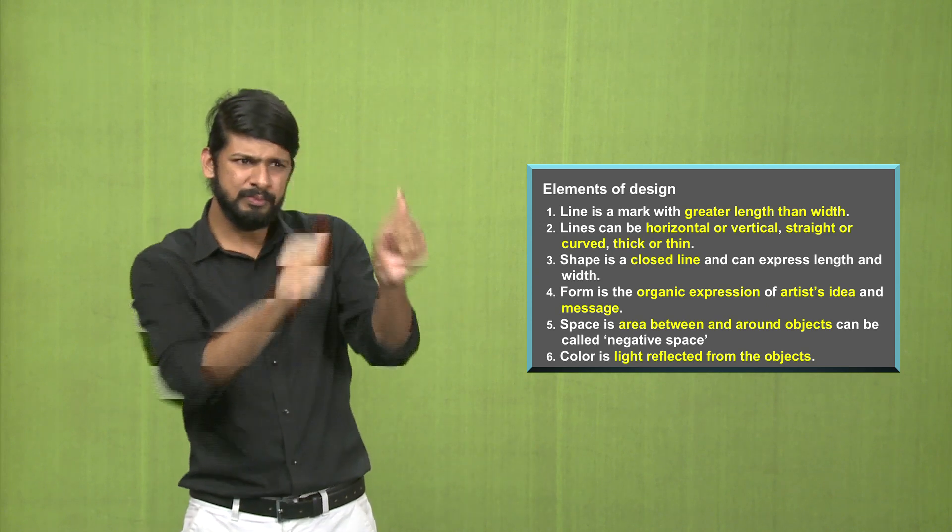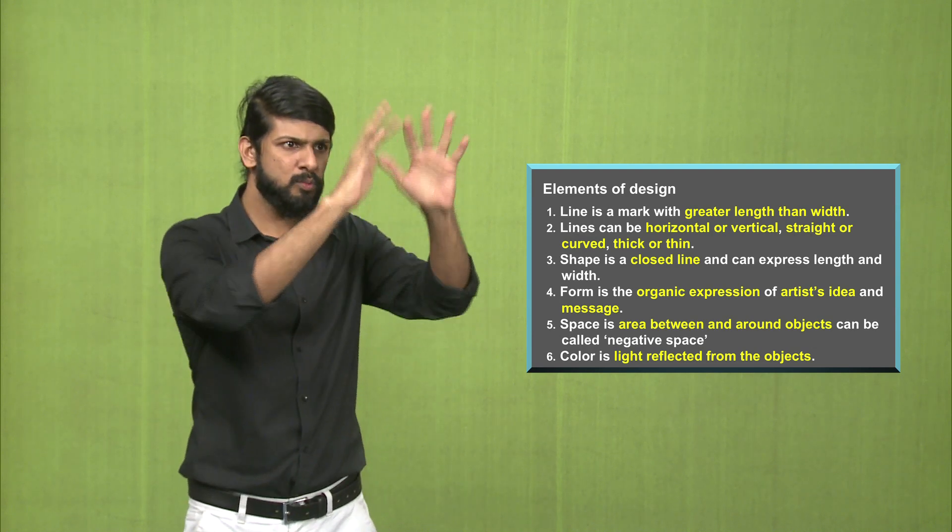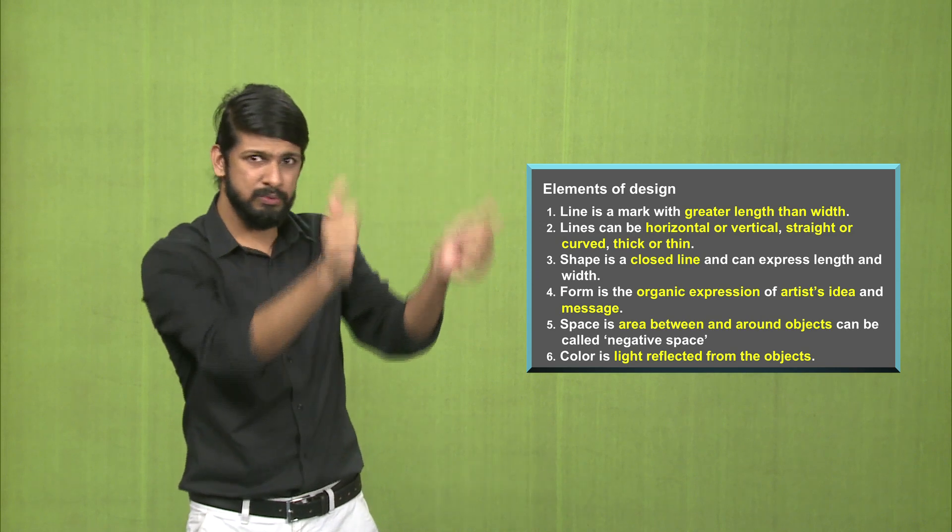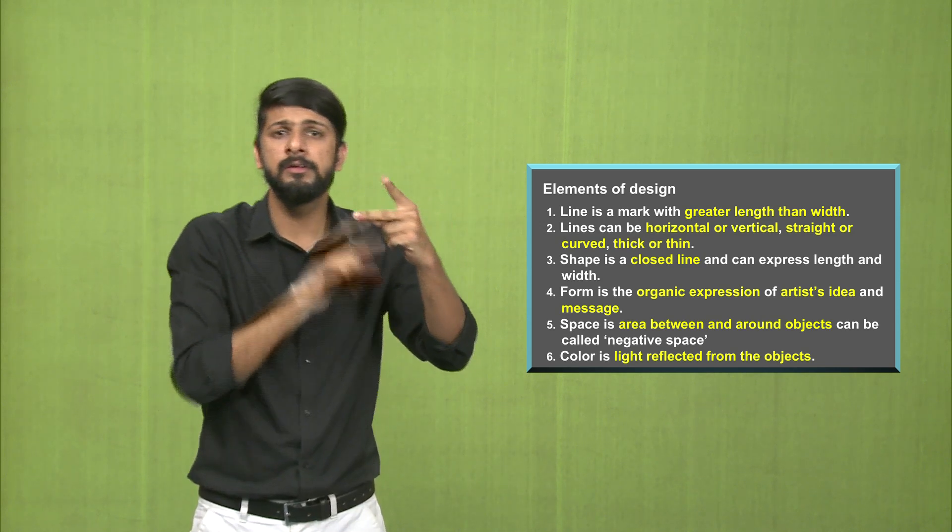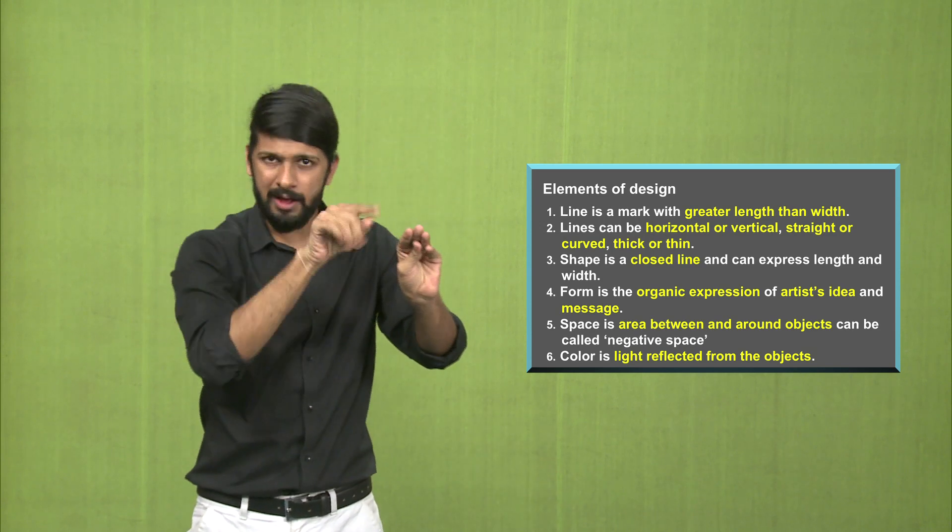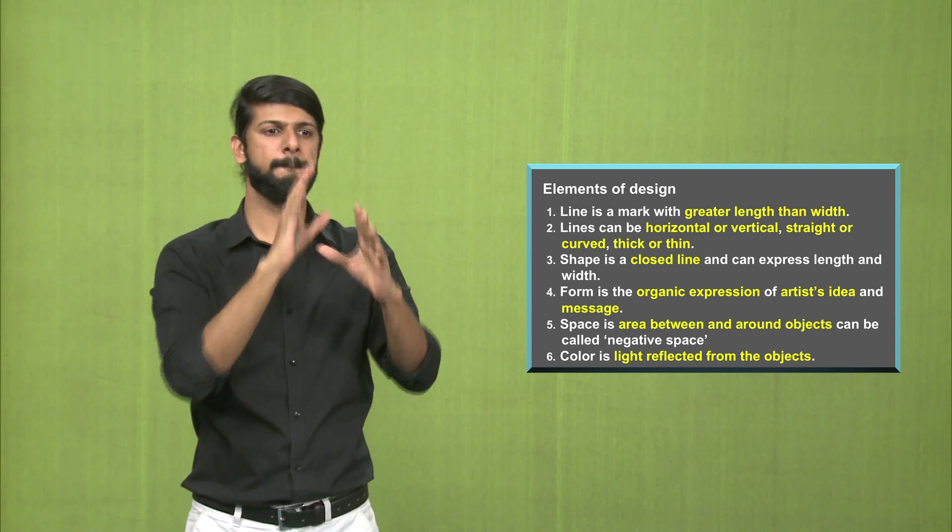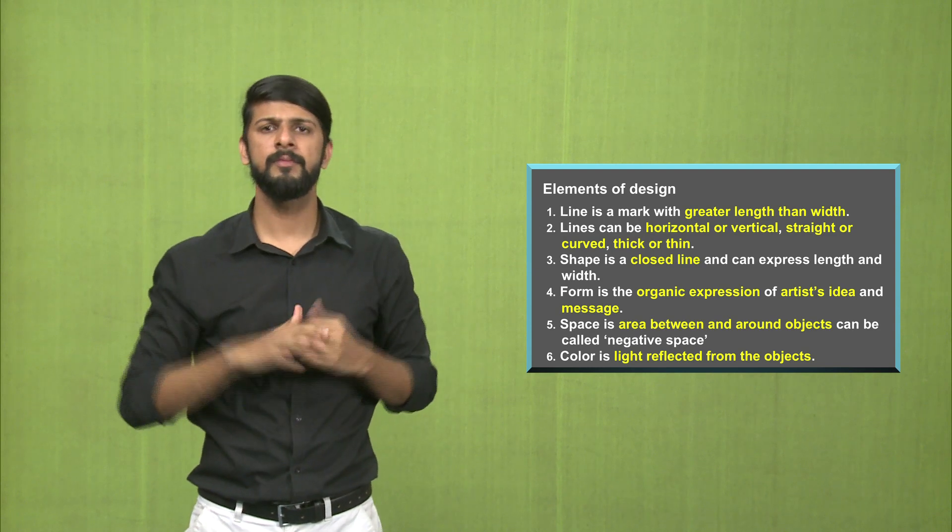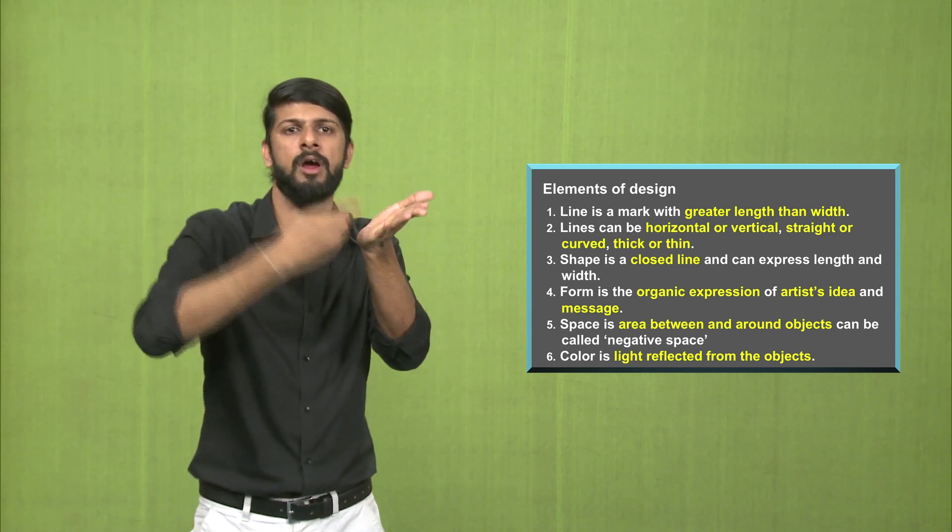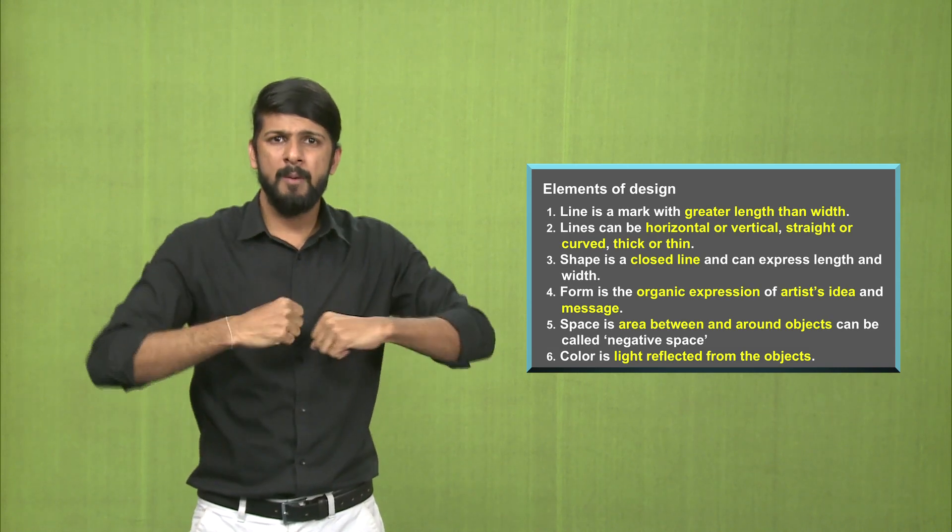Next is form. Form is the organic expression of the artist's idea and the message. For example, in still life, you have a jar, you have fruits and other things. There would be light and the play of shadow. In landscape, in a natural environment would also have lot of elements. Even in the illustration, there would be the aspiration of the artist. The various kind of compositions have their own form, which is the depiction of the expression of the artist's idea, what they want to represent or what the message is.